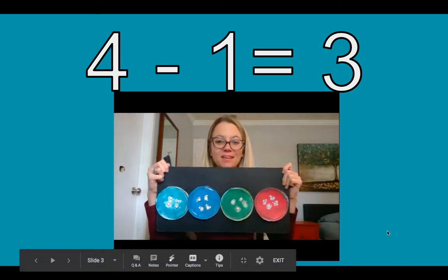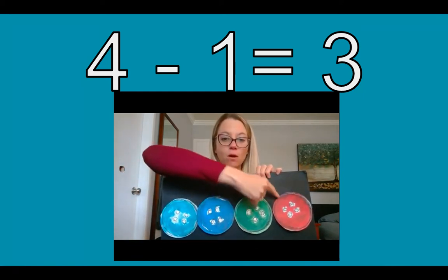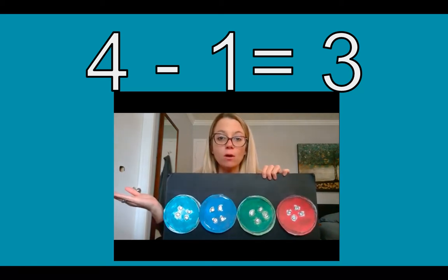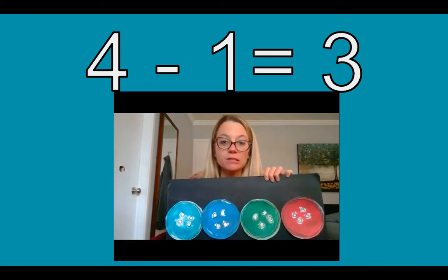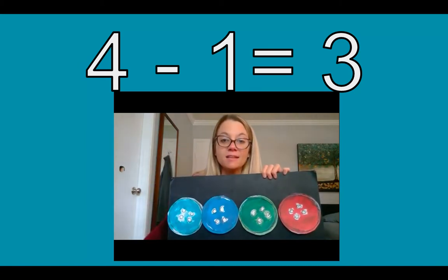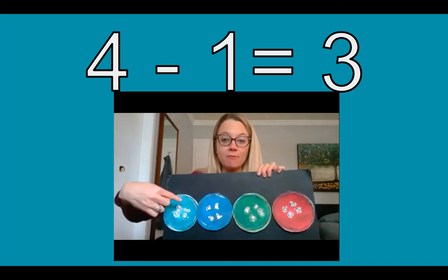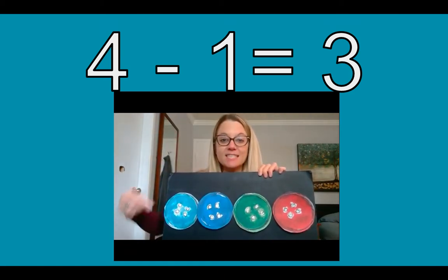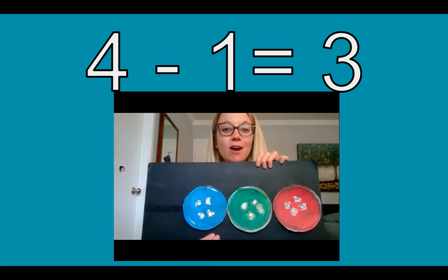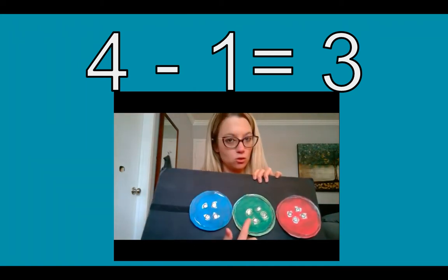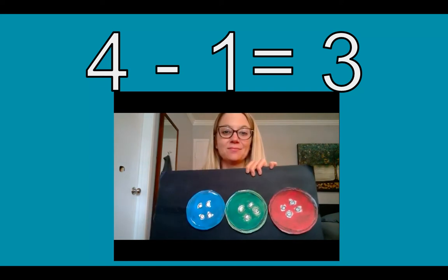Here we go! Here's the four groovy buttons — one, two, three, four. But oh no, one of Pete's buttons popped off and rolled away. Do you remember the number sentence? It said four take away one equals three. Let's check this. I have my four buttons, let's take one away. Take away means it doesn't come back. Now how many are left? One, two, three. It's right — four take away one is three. Let's keep reading.